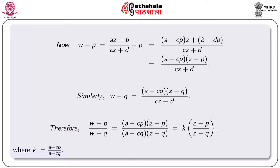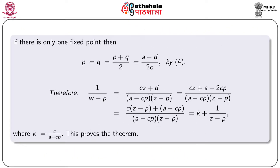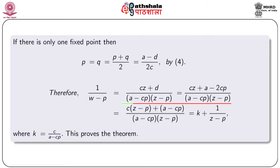If there is only one fixed point, then P equal to Q equal to (A minus D) by 2C, from equation 4. Therefore, 1 by (W minus P) equal to Cz plus D by (A minus CP) times (Z minus P). Now we replace the value of D from this equation and simplifying we obtain 1 by (W minus P) equal to K plus 1 by (Z minus P), where K equal to C by (A minus CP). This proves the theorem.